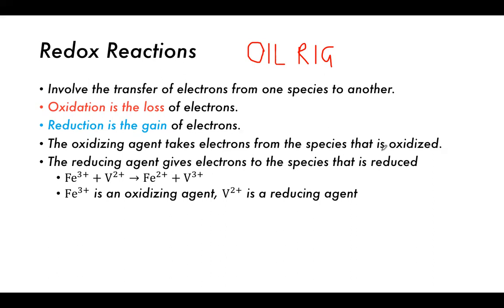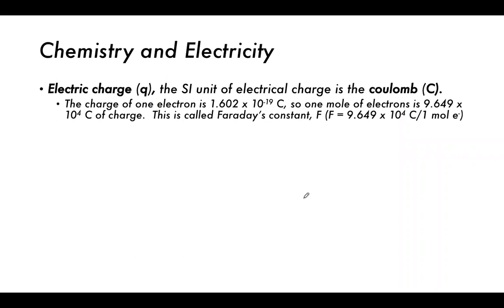For example: Fe³⁺ and V²⁺ react to give Fe²⁺ and V³⁺. Iron goes from Fe³⁺ to Fe²⁺, gaining an electron — it is reduced. Vanadium goes from V²⁺ to V³⁺, losing an electron — it is oxidized. Therefore, Fe³⁺ is the oxidizing agent and V²⁺ is the reducing agent.